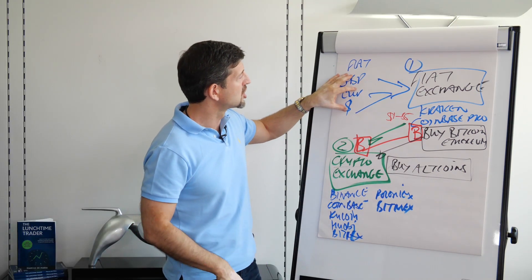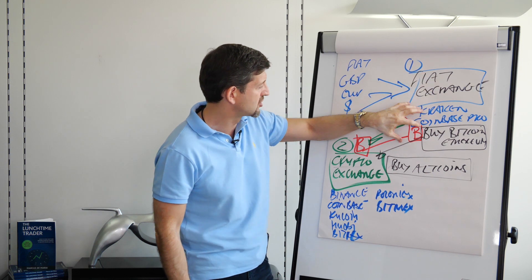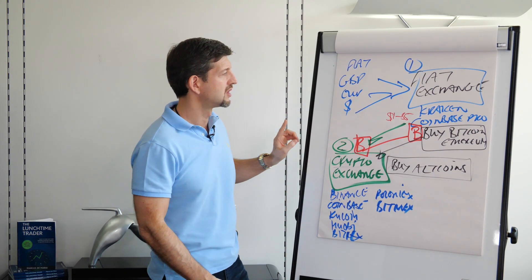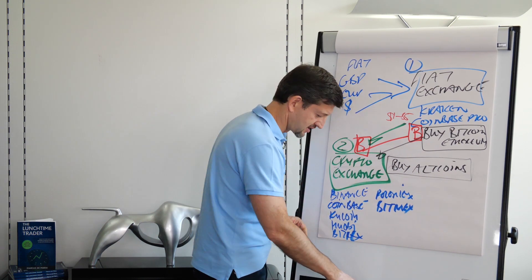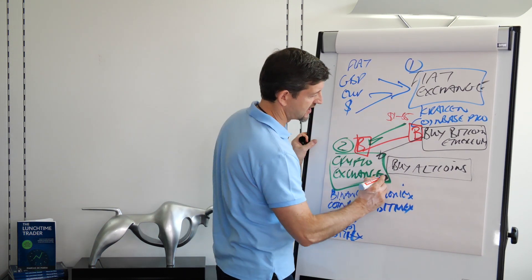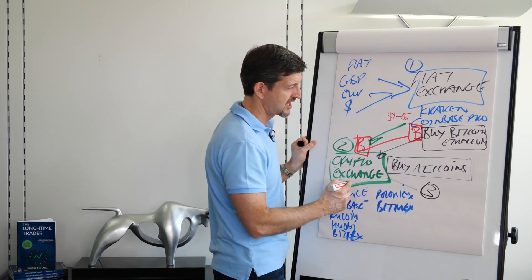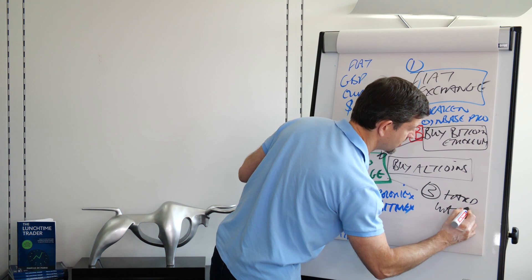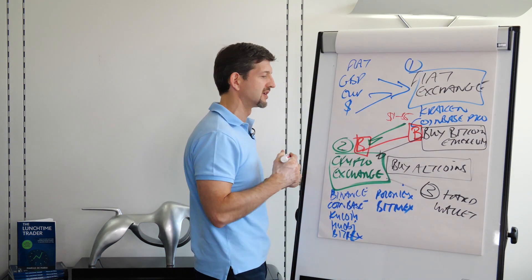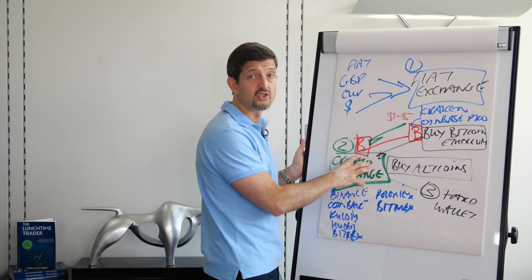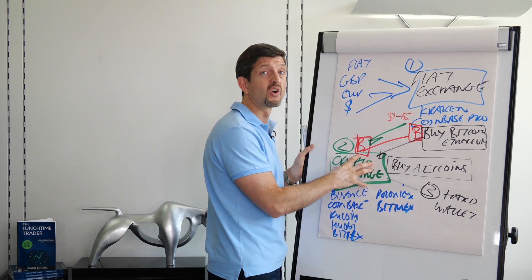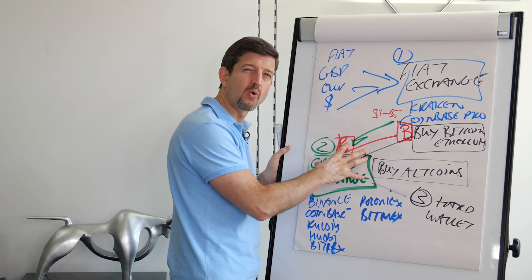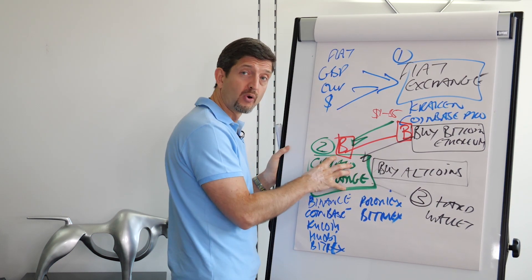Do you go by a fiat exchange, buy Bitcoin and then go to a crypto exchange, or do you do something else? There's another thing that you need to do after that. Number three is you need to get it off the exchange and go to a hard wallet. Now I'm not going to go into what that is right now because that wasn't the question, but you need to get it off the exchange because the exchanges are generally what gets hacked - it's not the blockchains, it's the exchanges.